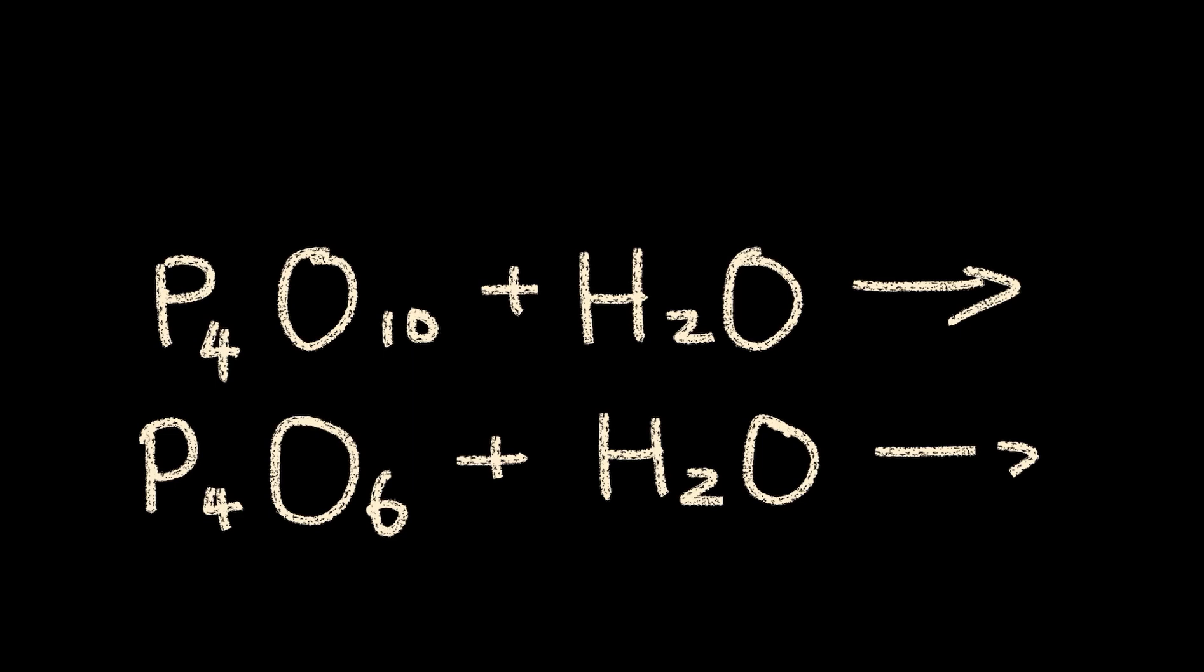Acids are made of oxyanions plus hydrogen, giving you an oxyacid. To find out what that will look like, we have to first think about what oxyanions this will form.